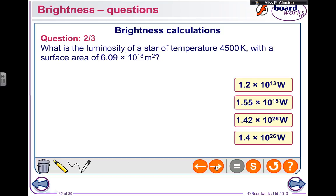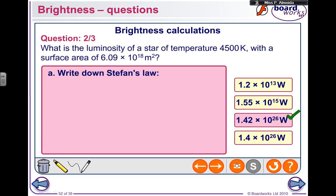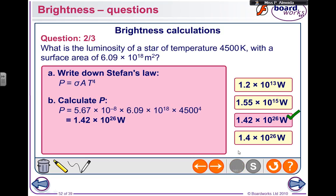What is the luminosity of a star of temperature 4,500 Kelvin with a surface area of 6.09 times 10 to the power of 18 meters squared? Now I use Stefan's law. I'm going to use Stefan's law that says power or luminosity equals the Stefan and Boltzmann constant times the area, surface area of the star times the temperature to the power of 4. So I do that, I'll calculate P.